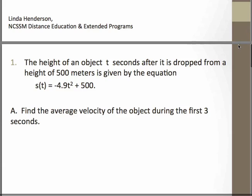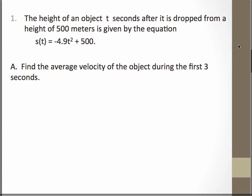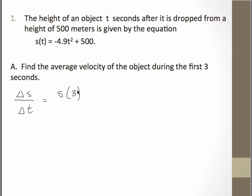So let's look at a few examples. The first one involves the height of an object that's given by this position function, and we're asked to find the average velocity during the first three seconds. So what we're trying to find is our change in position over change in time. So substituting into the position function, I'll leave you to make sure you're getting the right answer. So that works out in the end to a negative 14.7, and the units of measure on this would be meters per second.